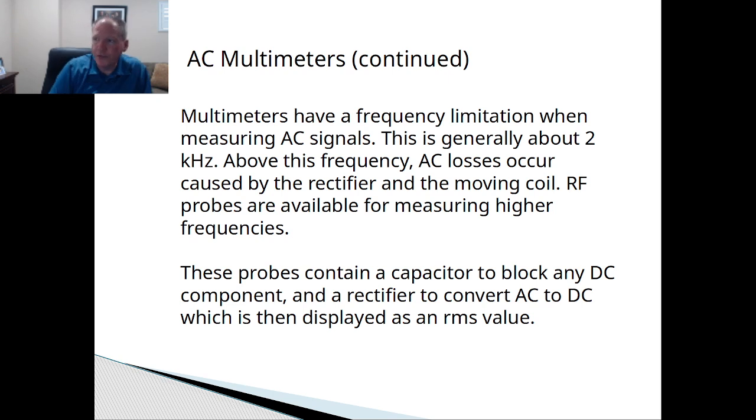Now there are frequency limitations when we use a multimeter and it's normally of about two kilohertz. Above this frequency, AC losses occur caused by the rectifier and the moving coil.